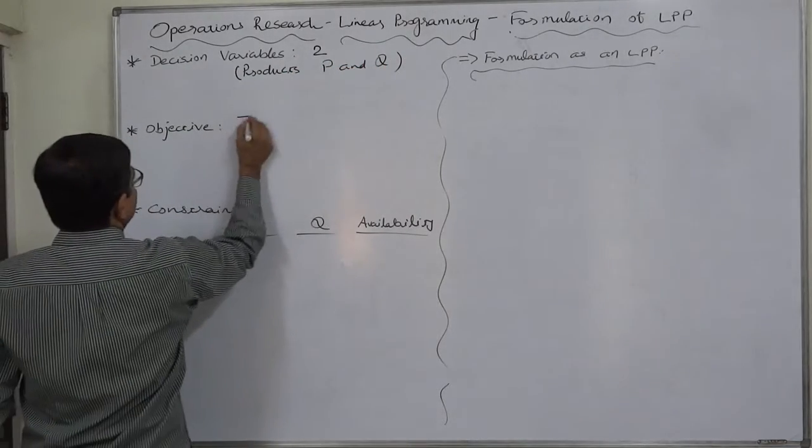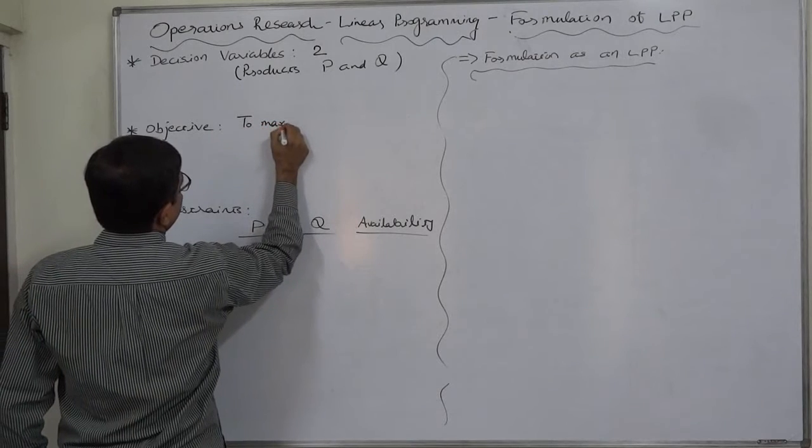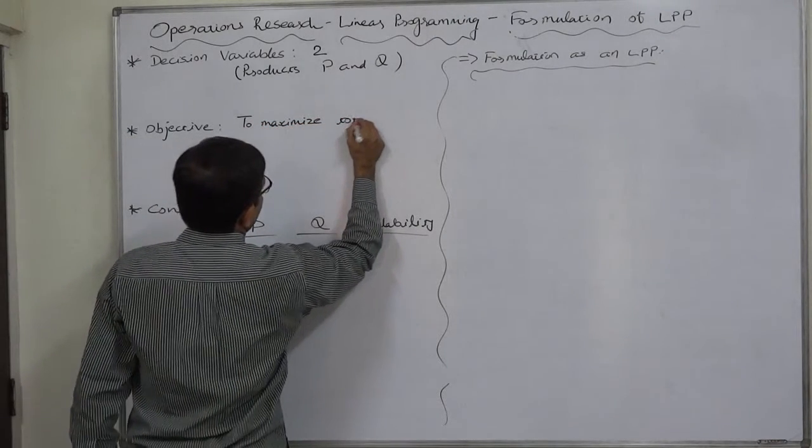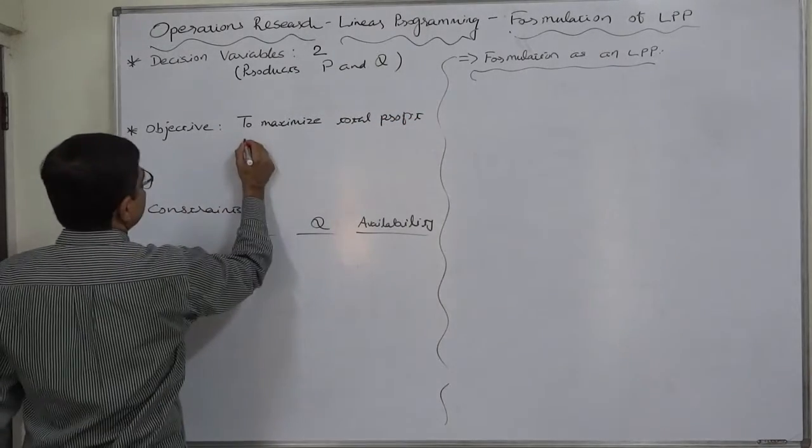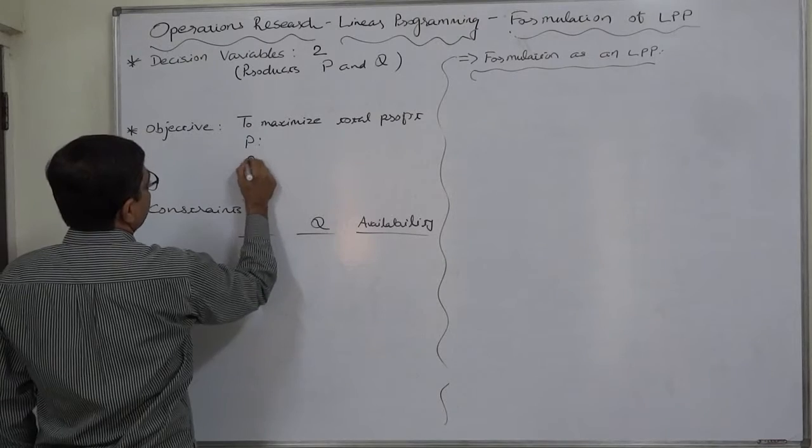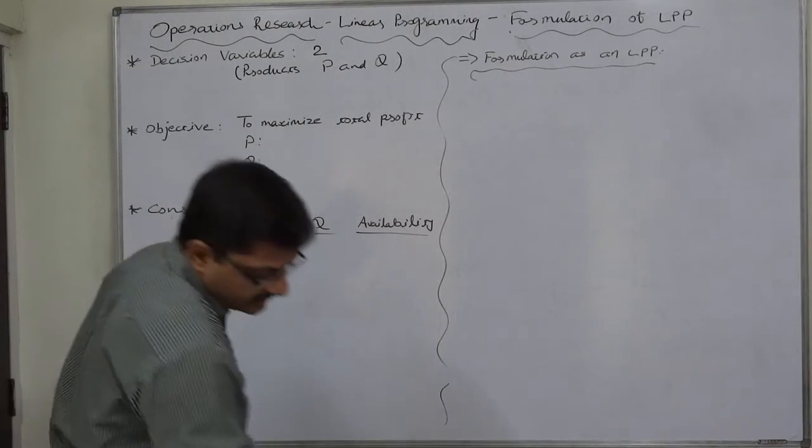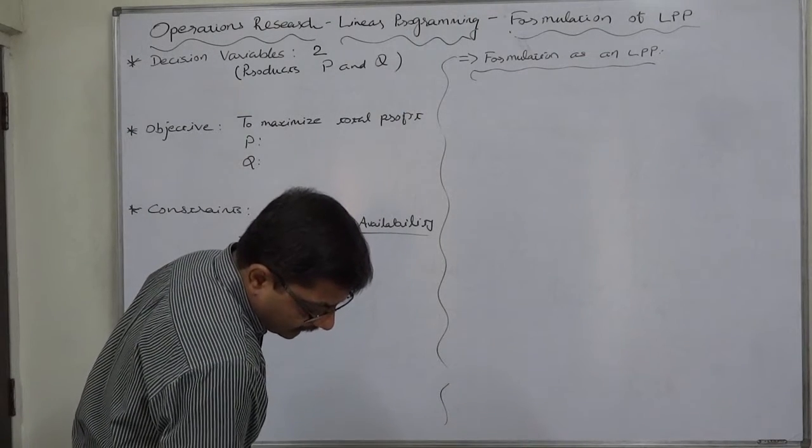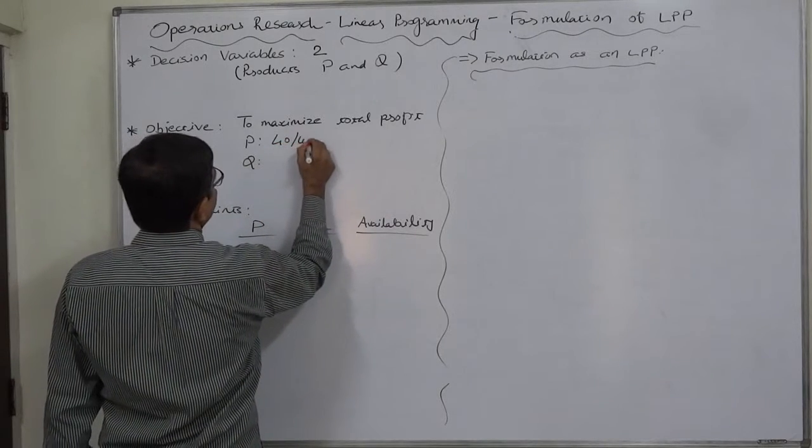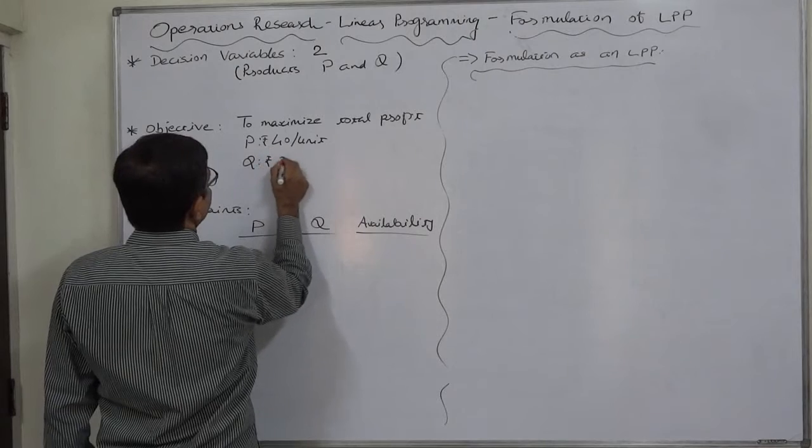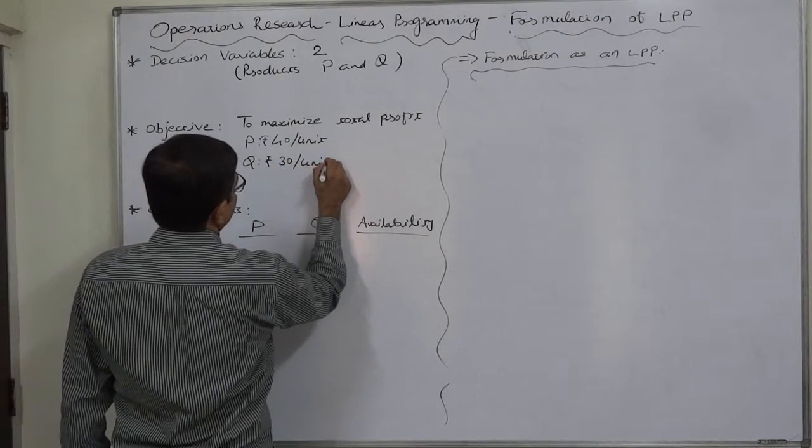The objective is to maximize total profit. The rate of profit is rupees 40 per unit of P and rupees 30 per unit of Q.